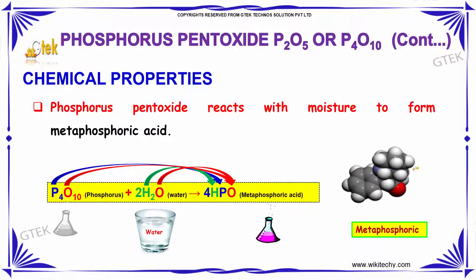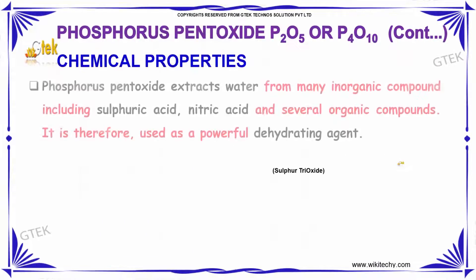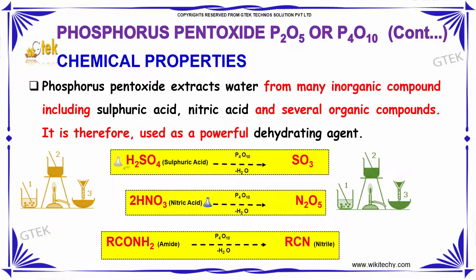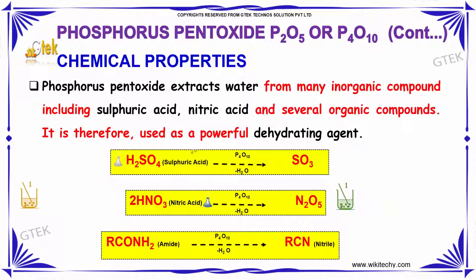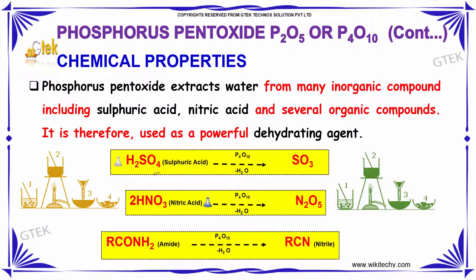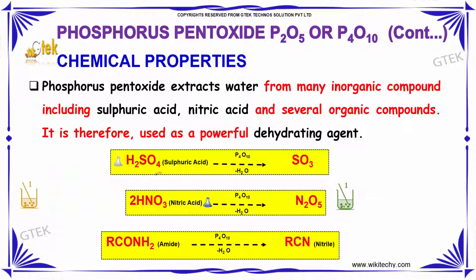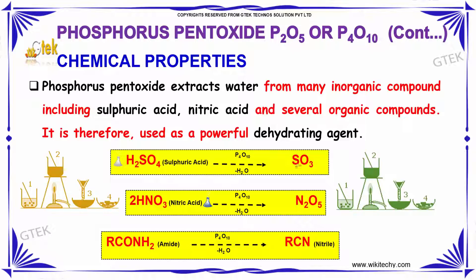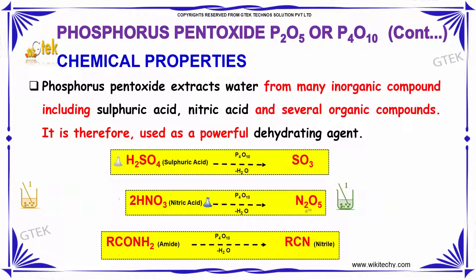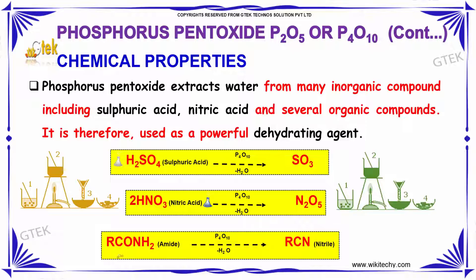Here is the symbol of metaphosphoric acid. Phosphorus pentoxide extracts water from many inorganic compounds including sulfuric acid and nitric acid, and also from organic compounds. From sulfuric acid it removes water to make sulfur trioxide; from nitric acid it forms nitric oxide; and from an amide it forms a nitrile, removing H₂O.